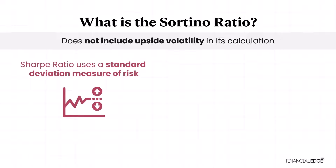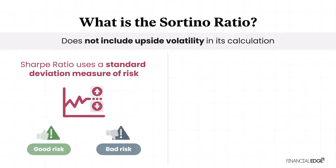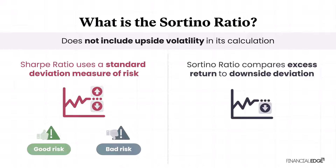By doing that, it addresses one of the major criticisms or shortcomings of the Sharpe Ratio. A Sharpe Ratio uses standard deviation as a measure of risk that includes both good risk and bad risk. For the Sortino Ratio, we compare the return only to the downside deviation because, after all, investors are most concerned with downside movements in the portfolio.